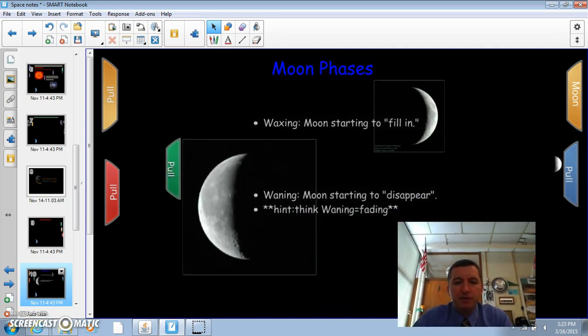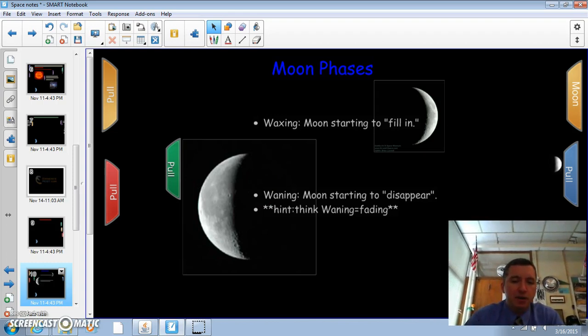So phases. Waxing and waning. So waxing, the moon is starting to fill in. When it's waning, it's starting to disappear. They're tough. A lot of you guys will confuse these things. Try to just think of waning as fading. It kind of sounds similar. It's the best thing I can try to tell you for that.